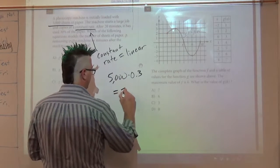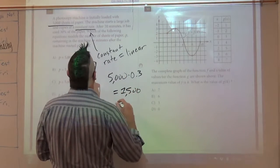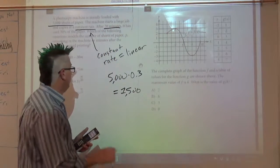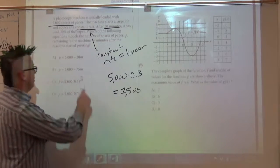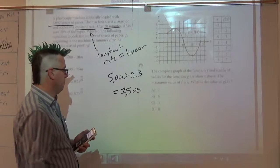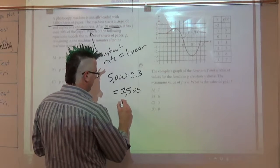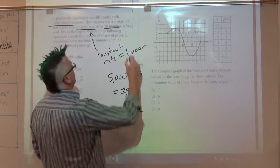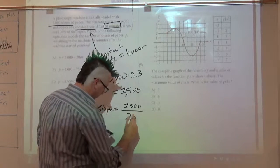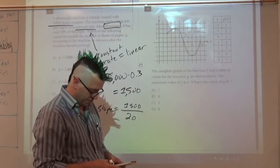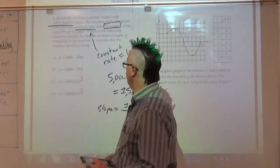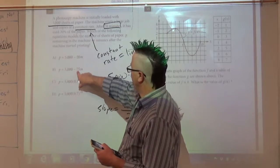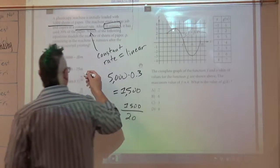Now we need per minute, because in here we have M, so it needs to be for each minute. So now my slope is actually going to be the 1500 divided by how many minutes, which was the 20. So divide 1500 by 20, I get 75. So this one, I start with 5,000 and it's going down 75 per minute. So B is going to be your answer.